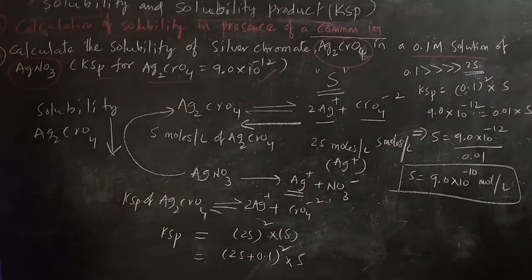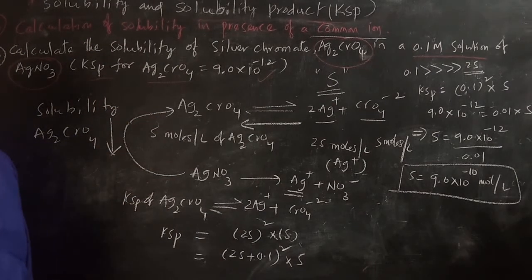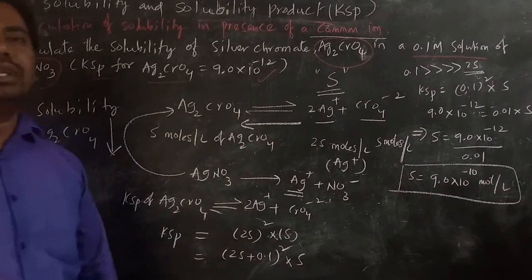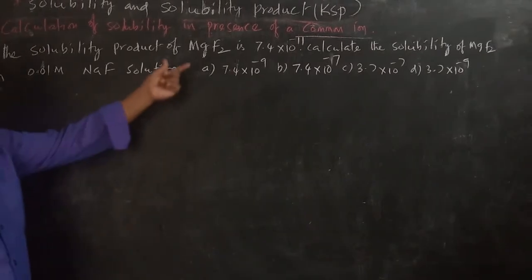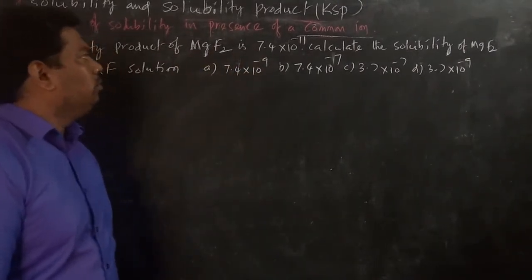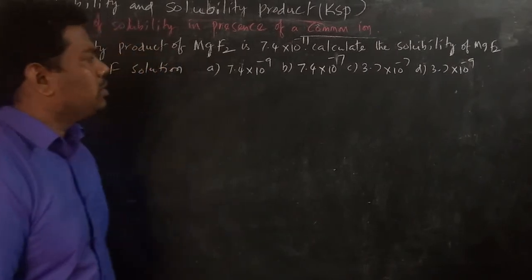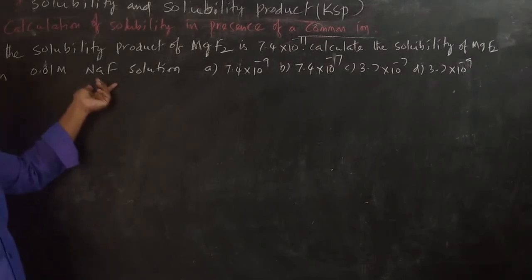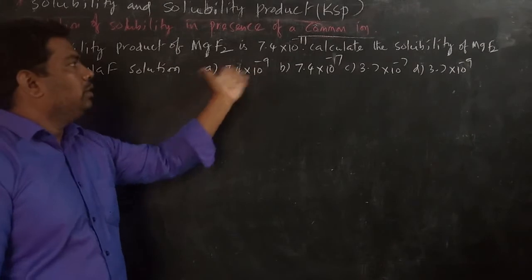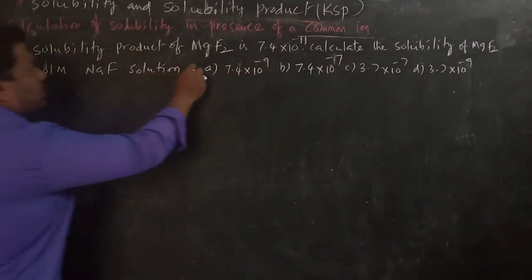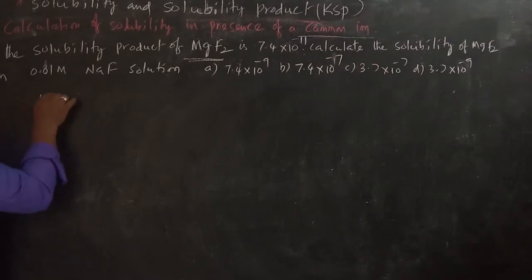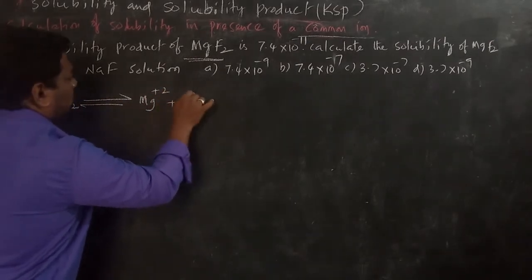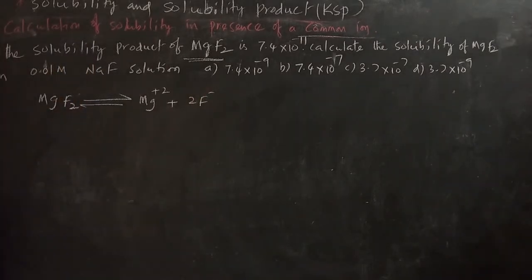When we add a common ion to a sparingly soluble salt, we decrease its solubility and the reaction shifts towards the left-hand side. The next problem: the solubility product of magnesium fluoride is 7.4 × 10⁻¹¹. Calculate the solubility of MgF₂ in 0.01 molar sodium fluoride solution. MgF₂ is in equilibrium with Mg²⁺ + 2F⁻.